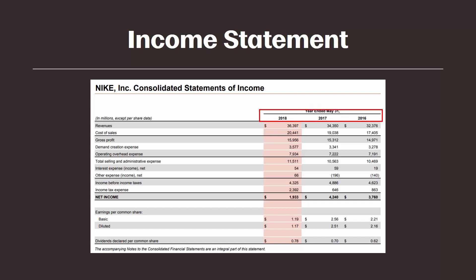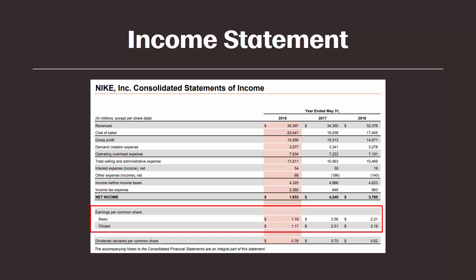We also see there are three years of data on the income statement. This is common, even though there are typically only two years of data on the balance sheet. Finally, at the bottom of the income statement, we see earnings per share. This is an incredibly important number to companies because investors place great emphasis on earnings per share. We aren't going to cover it in these modules, but you will definitely cover it in more detail in any accounting classes you may take.